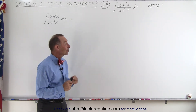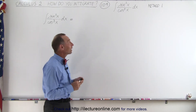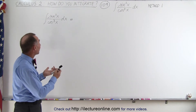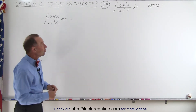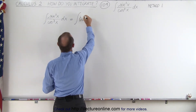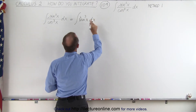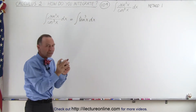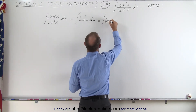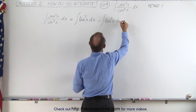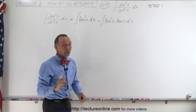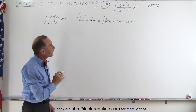We're going to find the integral of sine cubed of x divided by cosine cubed of x. The first thing we recognize is that sine divided by cosine can be written as tangent, so we write this as the integral of tangent cubed of x dx. We then split it as a product: the integral of tangent squared of x times tangent of x dx. We then recognize that tangent squared of x can be written as secant squared of x minus 1.